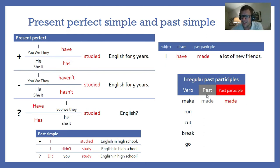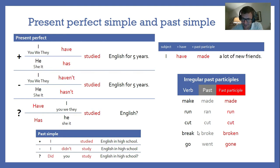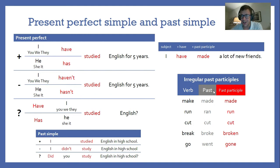These irregular verbs behave differently. For 'run': run, ran, run — the past participle is the same as the original verb. For 'cut': cut, cut, cut — it's the same in all forms. For 'break': break, broke, broken — it's different in all forms, with an 'n' at the end. And then sometimes something completely different — go, went, gone. I have gone is the present perfect of 'I went'. I'm sorry but irregular past participles you just have to learn. As you become used to them, you'll build them up and get familiar.